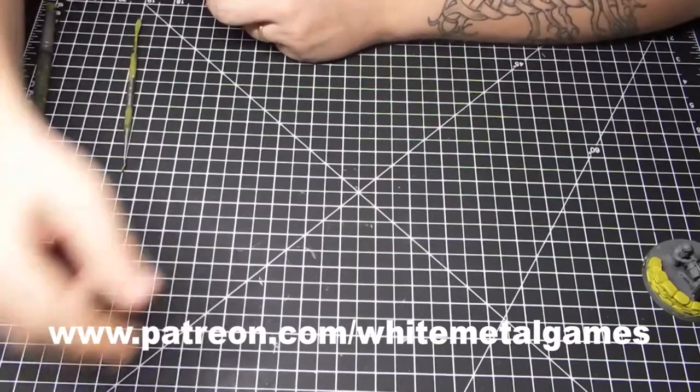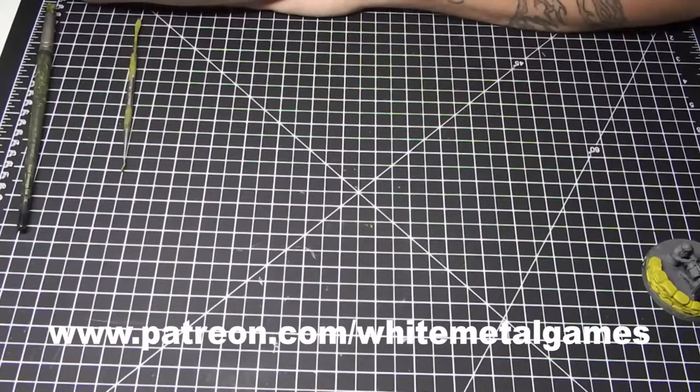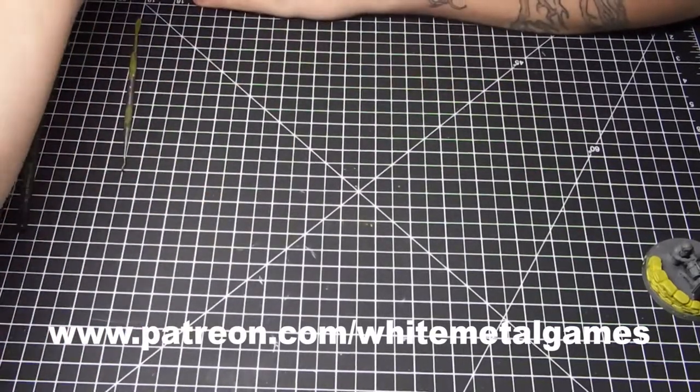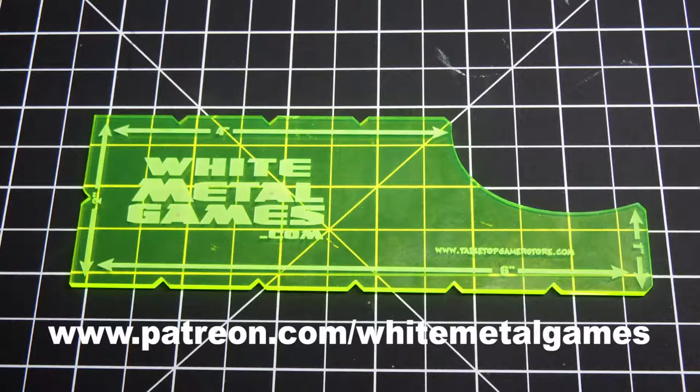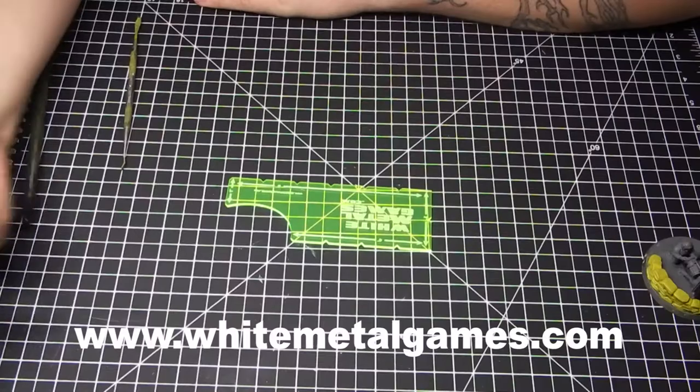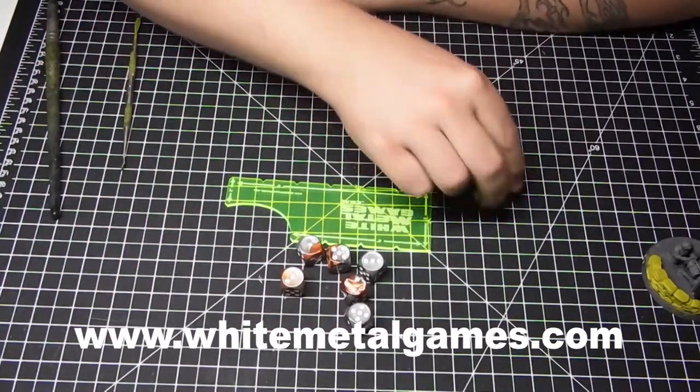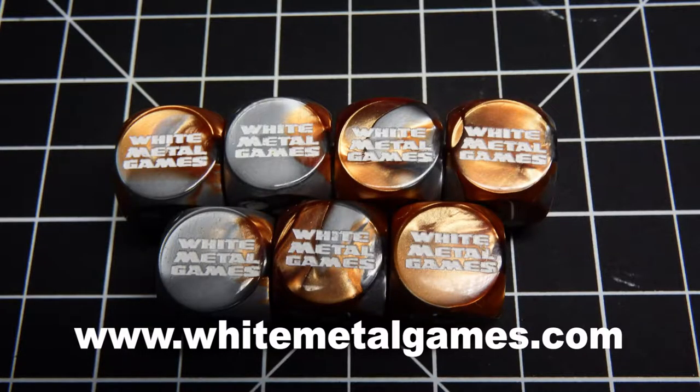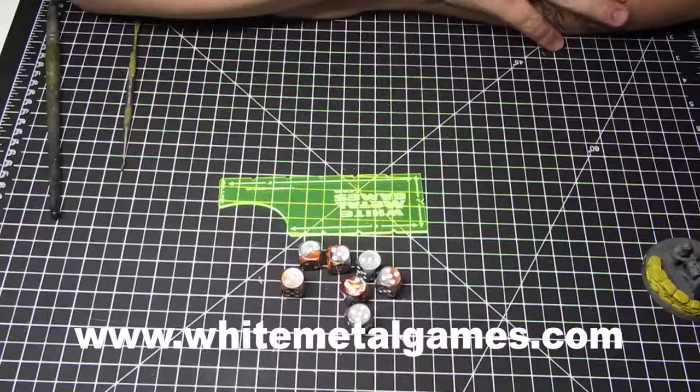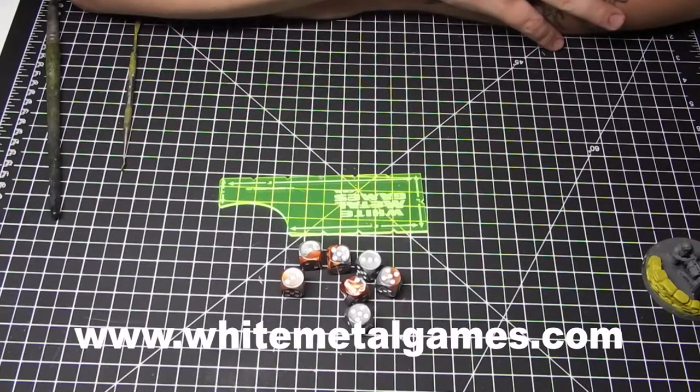As always, check out our Patreon channel if you're viewing this on YouTube. It's patreon.com/whitemetalgames. You can also check out all of our work on whitemetalgames.com. If you're in the buying mood, we have lots of merch for sale on our website, including these dice, not guaranteed to roll sixes, and these tag templates, perfect for the new eighth edition of 40K. That's it for me. Until next time, put your minis where your mouth is.